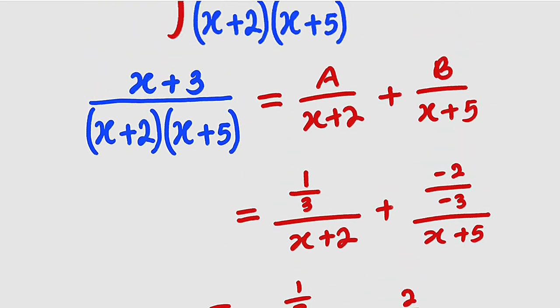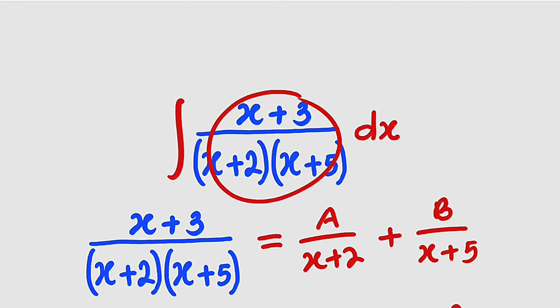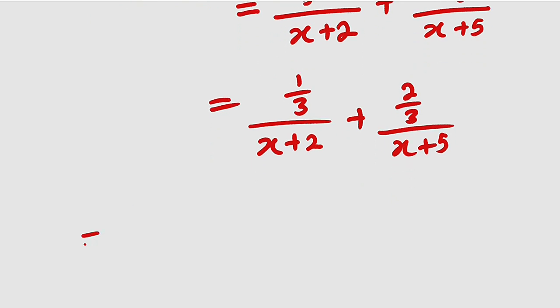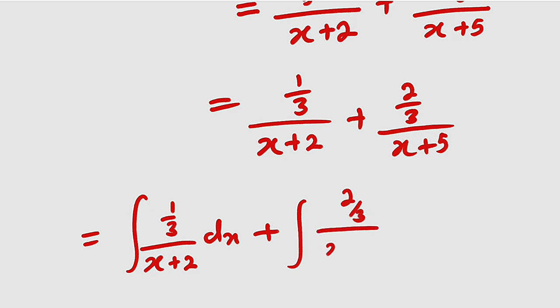So now instead of this function, we are going to replace it with these two fractions. So now our integration becomes the integral of (1/3)/(x+2) dx plus the other one, the integral of (2/3)/(x+5) dx.